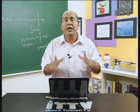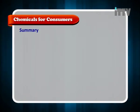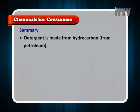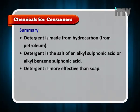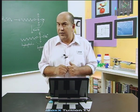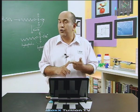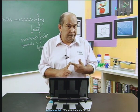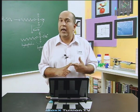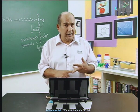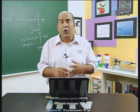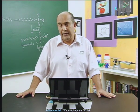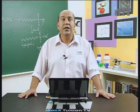Quick summary: detergent is made from hydrocarbon from petroleum. Detergent is the salt of an alkyl sulfonic acid or alkyl benzene sulfonic acid. Detergents are more effective than soap. The key thing to remember is that detergent forms soluble salts with calcium and magnesium ions, whereas soap forms insoluble salt with these ions, which is called scum. Straight-chain detergents are biodegradable but branched chains are not. We can also add enzymes to help with biological stains, as well as whitening agents, perfumes, and other additives, since we can change the shape of the detergent for a specific task.